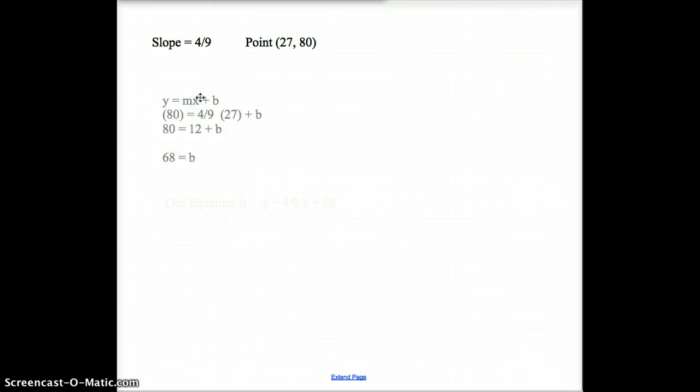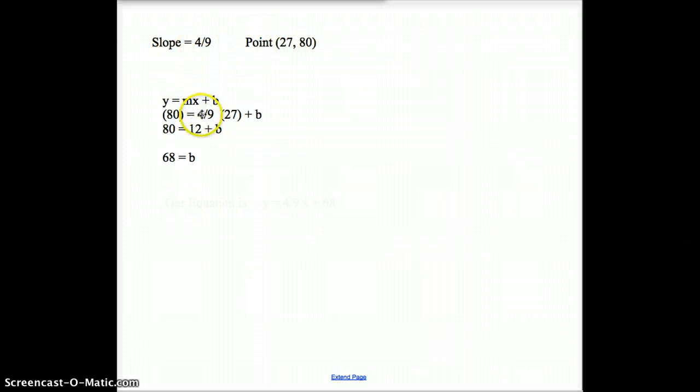To walk you through that again, here's our y equals mx plus b. The y in this case equals the 80. The slope is the 4/9ths right here, and the x is 27. And now we just solve for b. 27 divided by 9 would be 3, and then 3 times 4 would be 12. Or there's other ways to get to that 12. And then we have to subtract 12 from both sides, and so 68 would be our b.